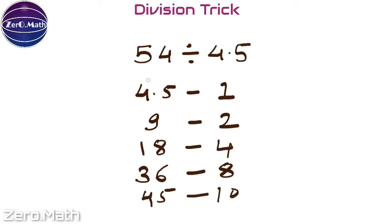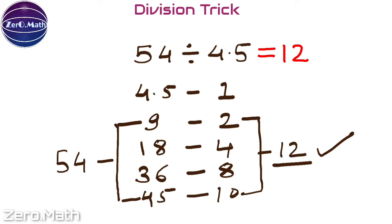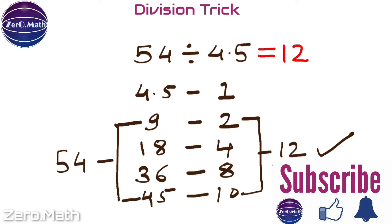Now, what sums up from the left-hand side to 54? If you take the sum of 45 and 9, which equals 54, that means the sum of 10 and 2, which equals 12, is the answer to this division. Friends, if you are really enjoying this video, please hit the like button and comment your valuable feedback.